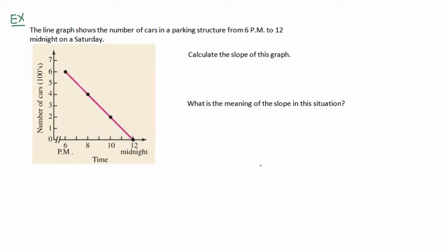Now back to our situation here. The line graph shows the number of cars in a parking structure from 6 PM to 12 midnight on a Saturday. As you can see, we have some values for the vertical axis and we have a scale selected for the horizontal axis. The units for the horizontal axis are hours of the day and the units for the vertical axis are the number of cars in hundreds.